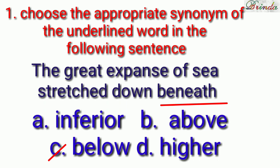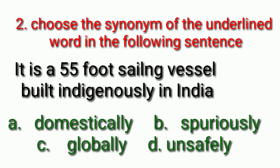The second one, it is a 55 foot sailing vessel built indigenously in India. The underlined word is indigenously. Your options are domestically, spuriously, globally, unsafely. Your countdown starts. And the answer is domestically. Indigenously, domestically, okay?